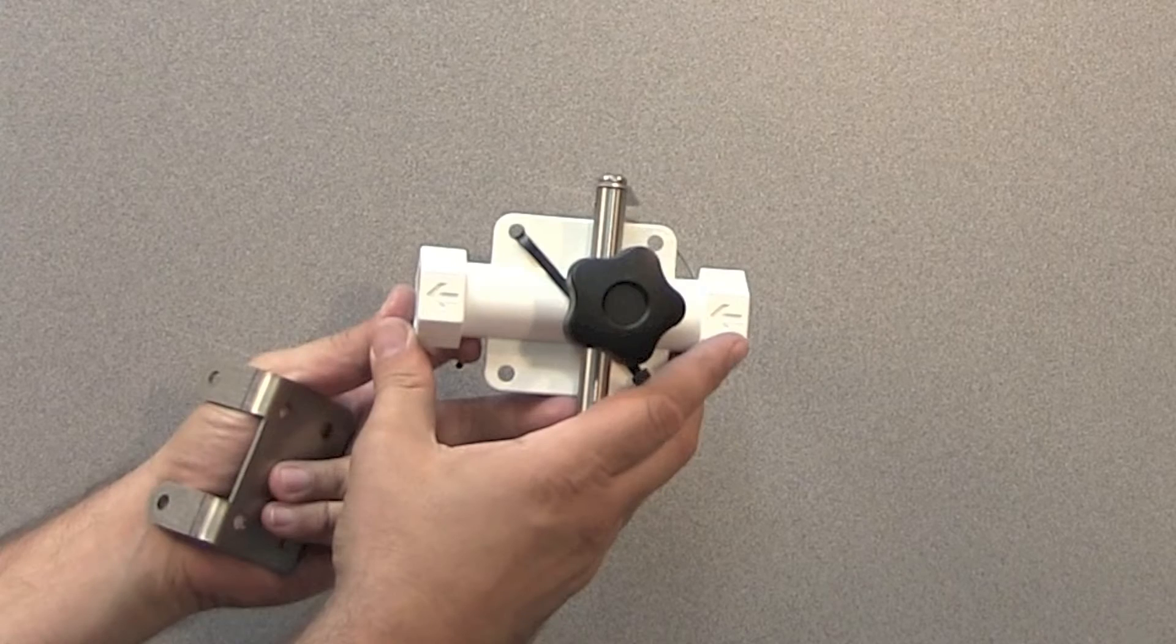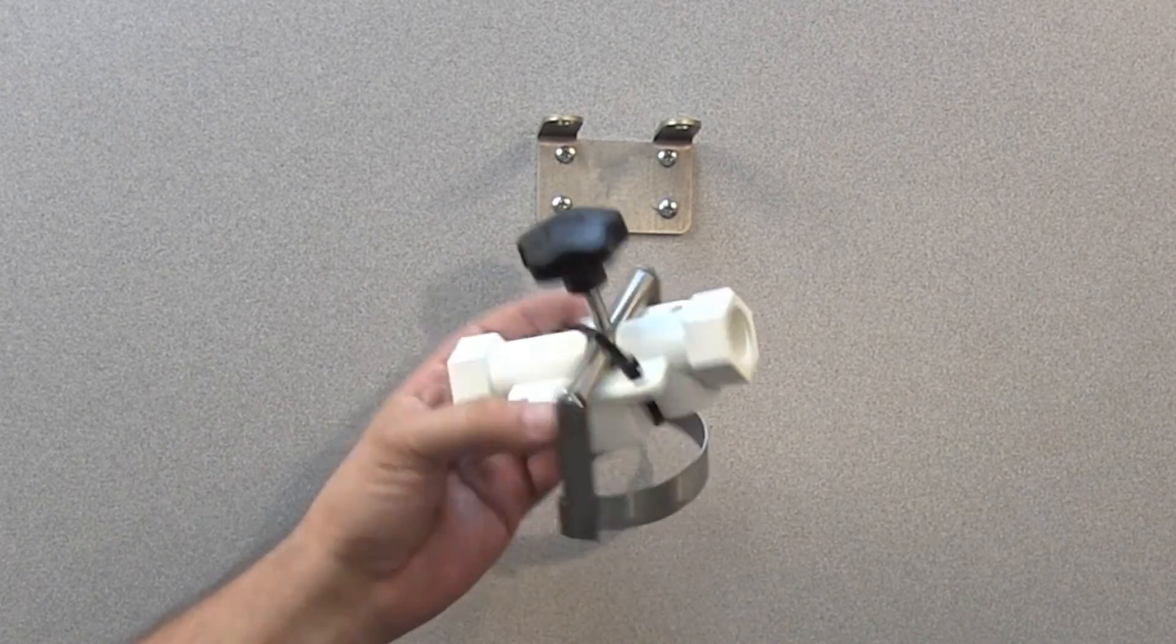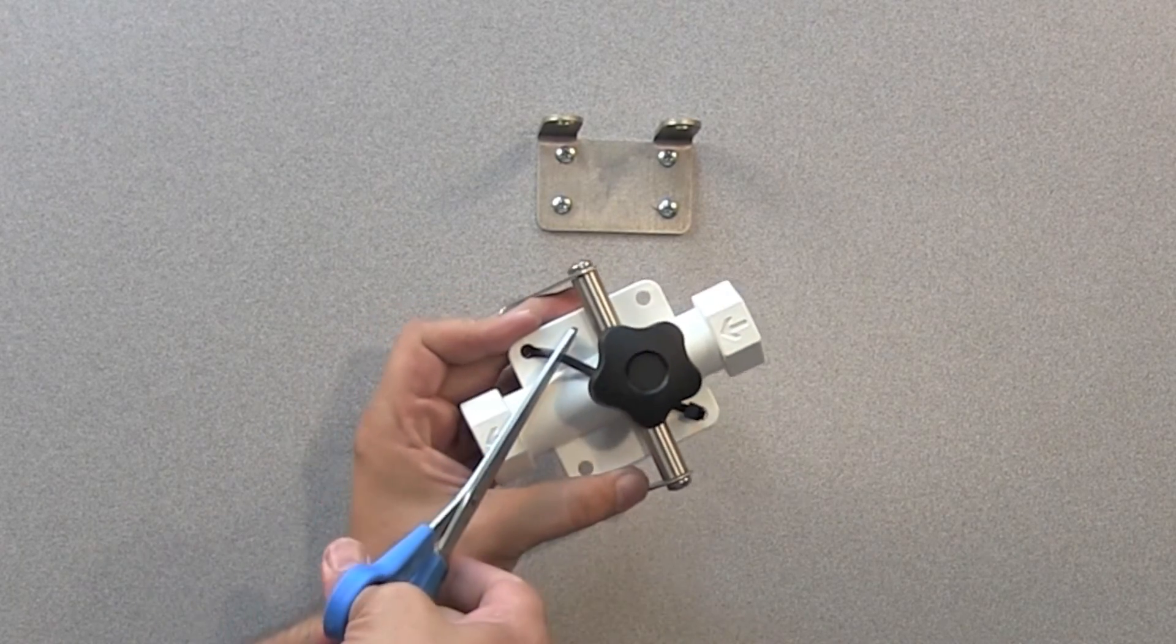The manifold assembly is shipped with a tie wrap around its body to keep the stainless steel filter retaining bracket in place. Cut the tie wrap and discard it.